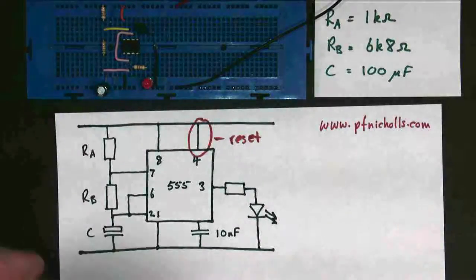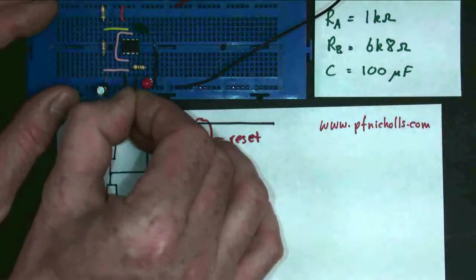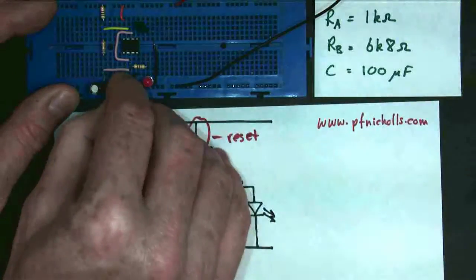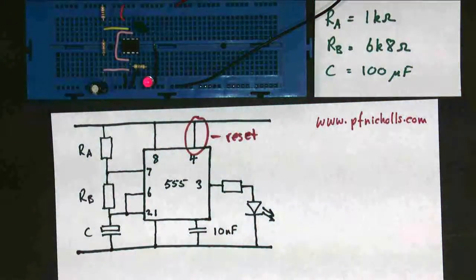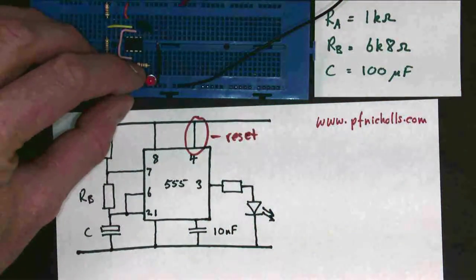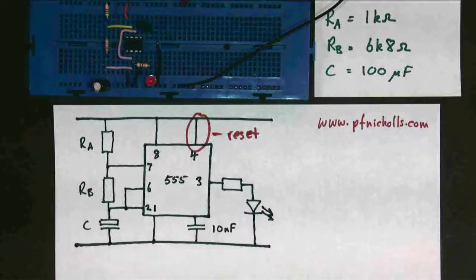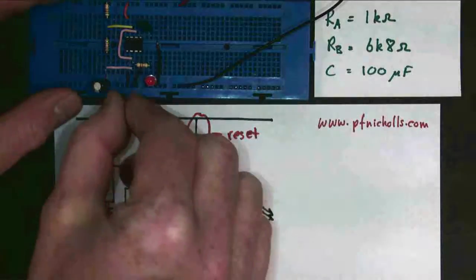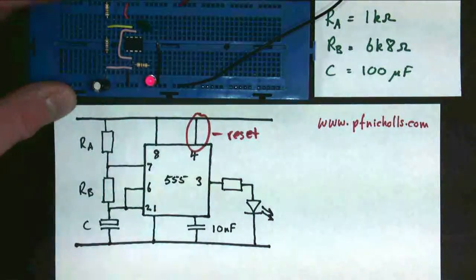However, if I take pin 4 and now connect it to ground, you'll notice the circuit stops oscillating. So pin 4 is an enable. When it's connected to ground, the circuit doesn't oscillate. And when it's not connected to ground, the circuit works as an A-stable.